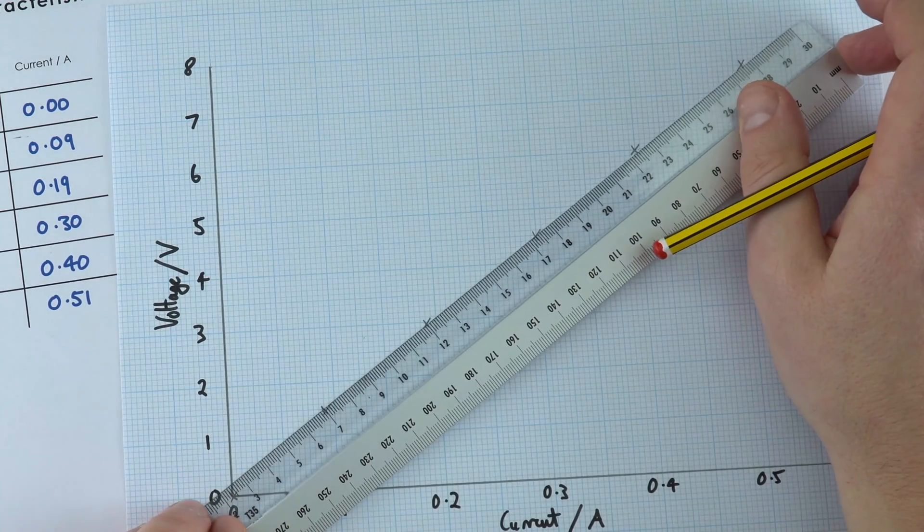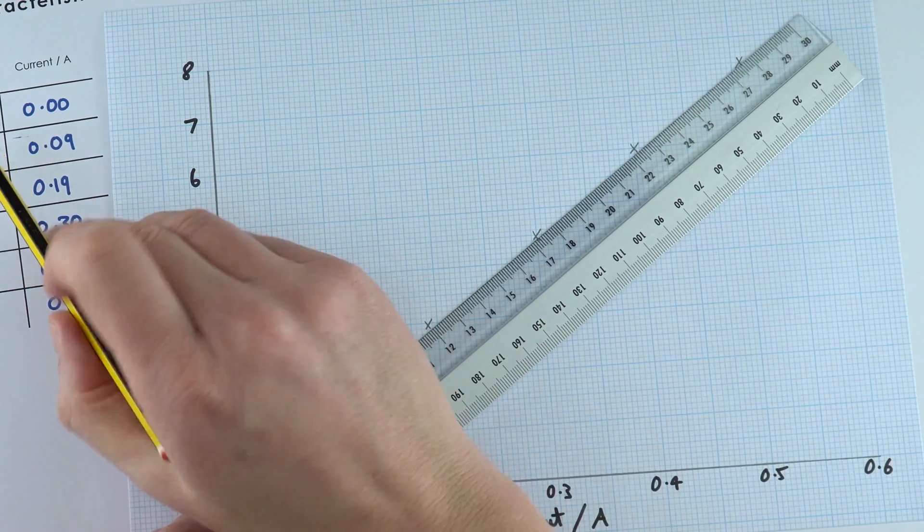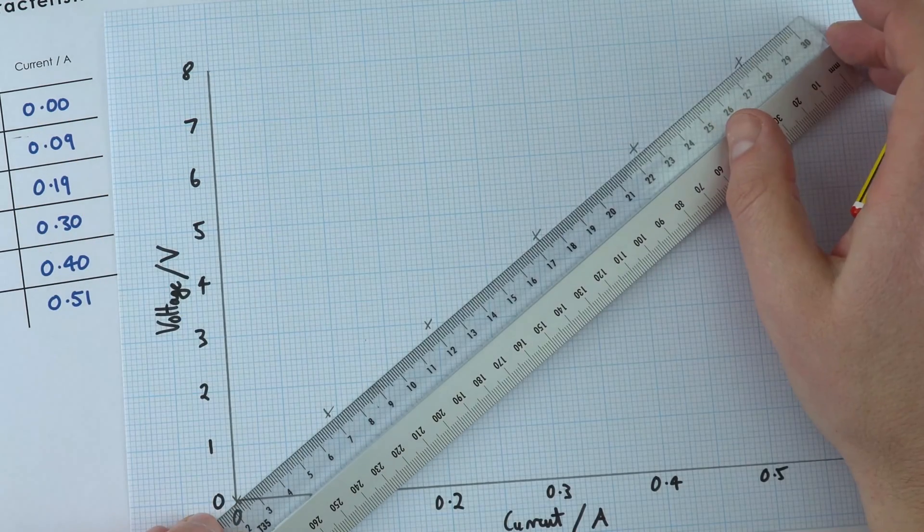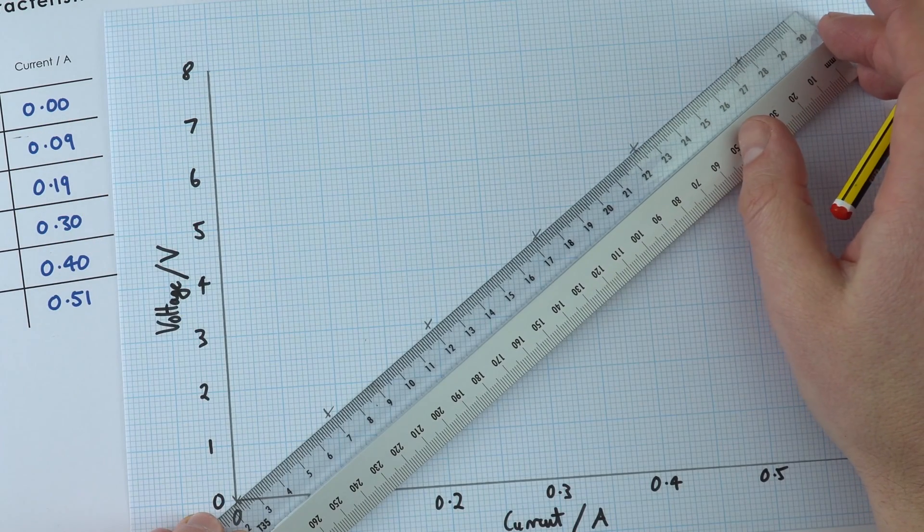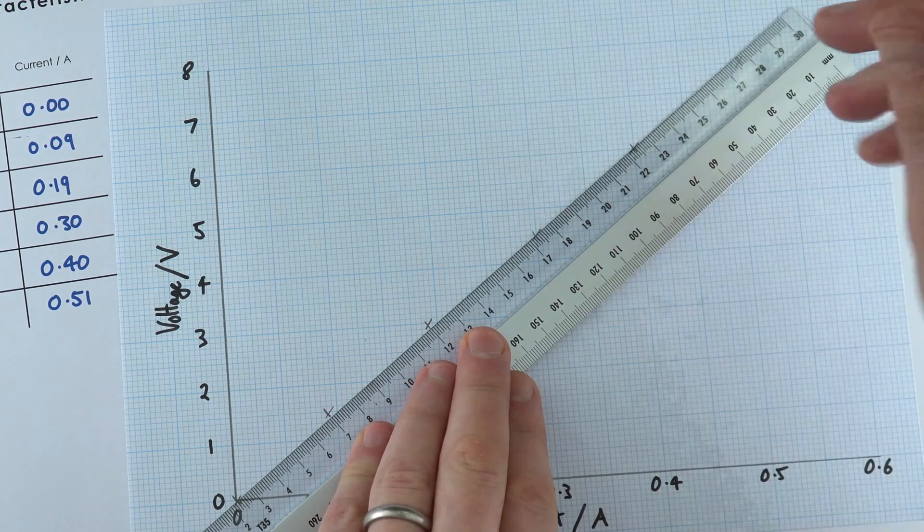And I'm just going to use my ruler to draw a straight line. And this is going to be going through the origin, because when we had 0 volts, we had 0 current. So I'm going to make sure that I've got approximately the same number of points above and below that line.